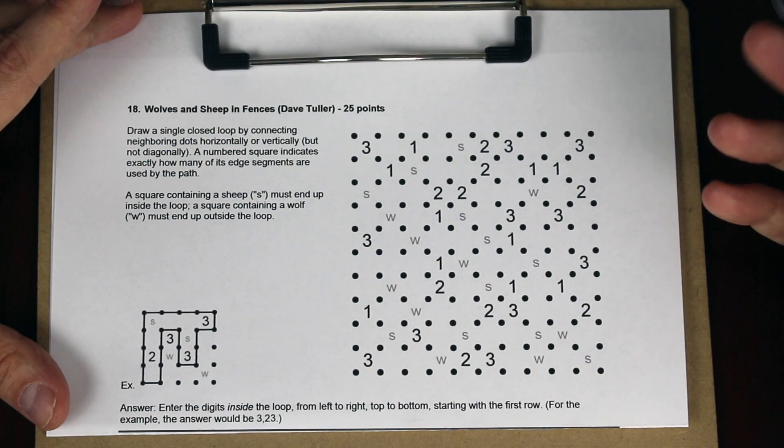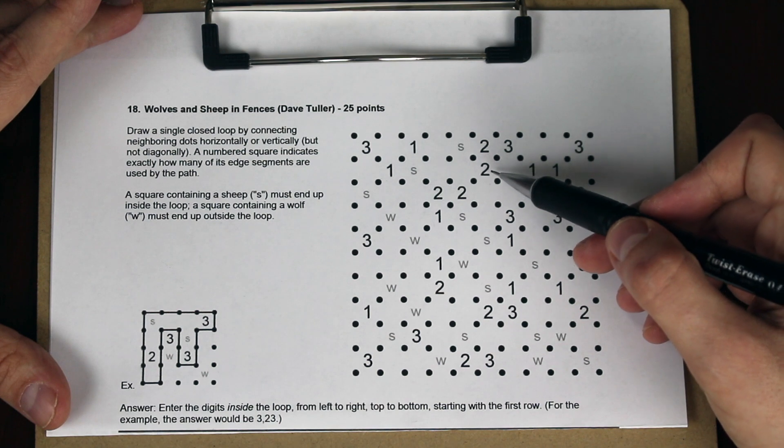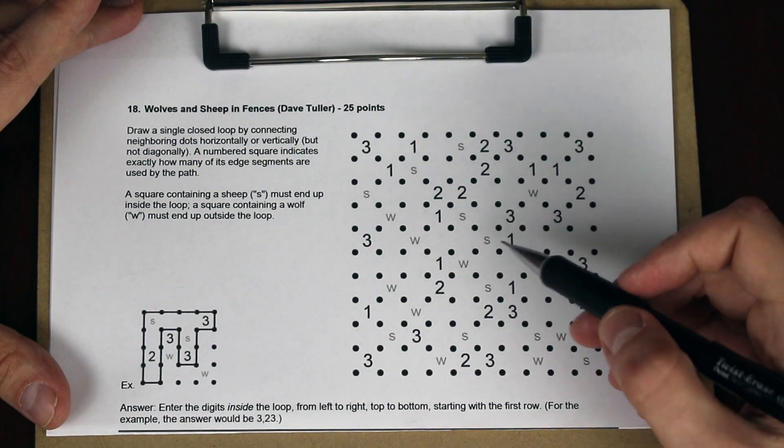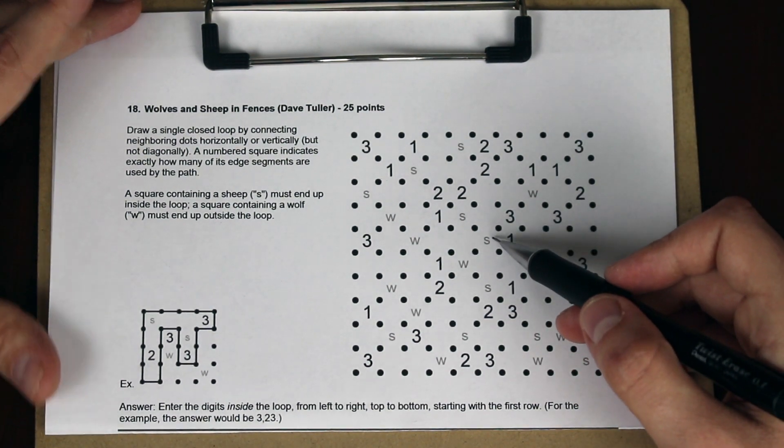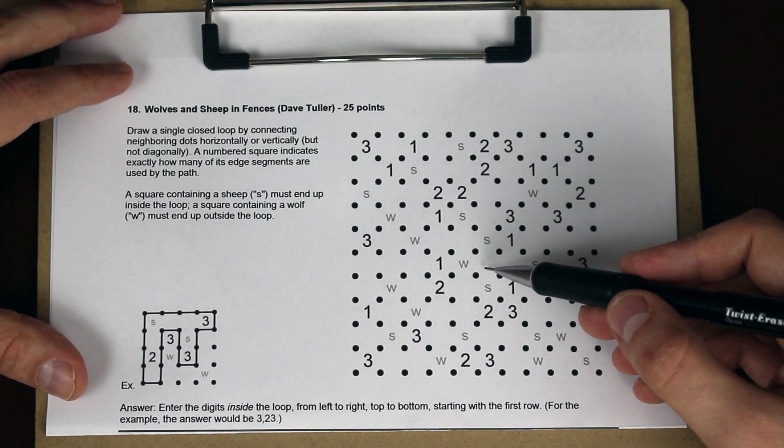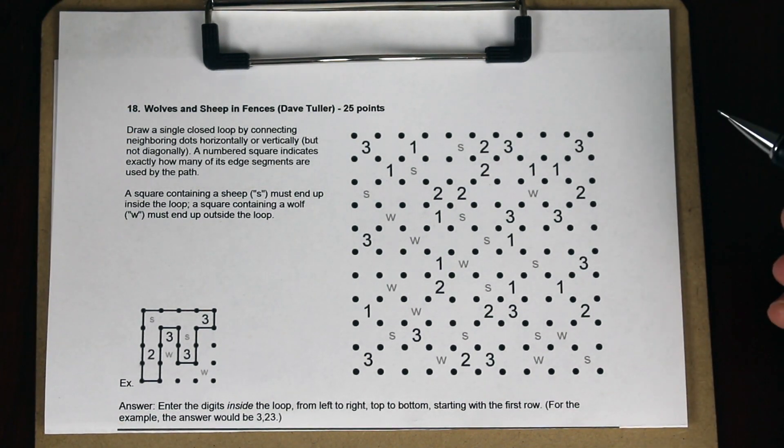It's very similar to Slytherlink. You're drawing a single closed loop, and the numbers in the squares indicate how many loop segments are around that square. But you may also notice that there's S's and W's in the grid. The S's represent sheep, which need to be inside the loop, and the W's represent wolves, which need to be outside of the loop.